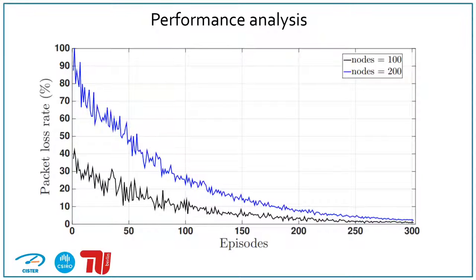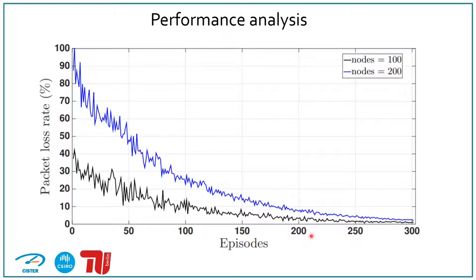Now let us look into some of the results. In this result, we can see the impact of the training episodes on the packet loss rate for different numbers of nodes. With fewer training episodes, the packet loss is higher. As the training episodes grow and the DDPG trains the actions, the packet loss significantly drops. By around 300 episodes, we can also eventually reach convergence.